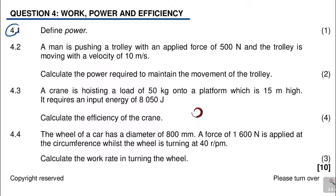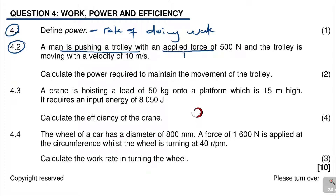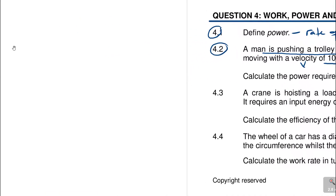The first part, 4.1, similar to the previous one: define power. We said power was the rate of doing work. We have looked at these definitions, but now let's look at 4.2. It says a man is pushing a trolley with an applied force F_A of 500 Newtons and the trolley is moving with a velocity of 10 meters per second. Calculate the power required to maintain the movement of the trolley. You need to know the formula for power.